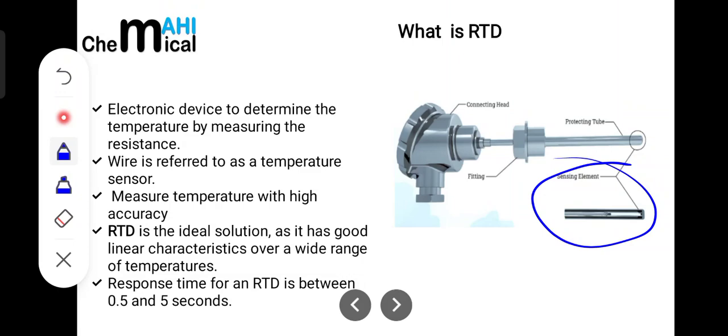We prefer this over other types of temperature detectors because it gives us highly accurate readings and its sensing time is very fast, 0.5 to 5 seconds. It gives us instant responses and is used over a wide range of temperatures that I will tell you in the next slides.